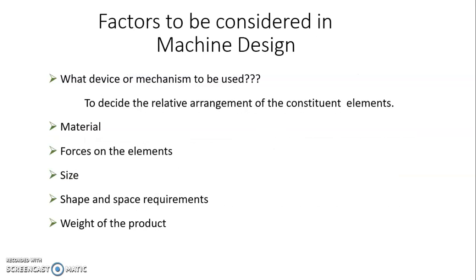The next part covers factors to be considered in machine design. The first and most important factor is the type of mechanism to use — what are the different constituent elements involved in that mechanism. For example, if you want to design a four-wheeler, you must know what different mechanisms can be incorporated, and how all these elements work together to perform their function.